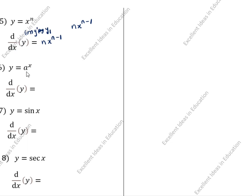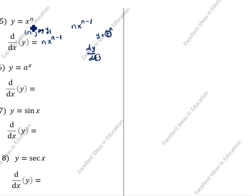Another method: we will write y' or y₁ — this is also the same. Instead of dx we will write dy/dt also. So if we have y = t^n, and t is the variable, we differentiate with respect to t. If x is given, differentiate with respect to x.